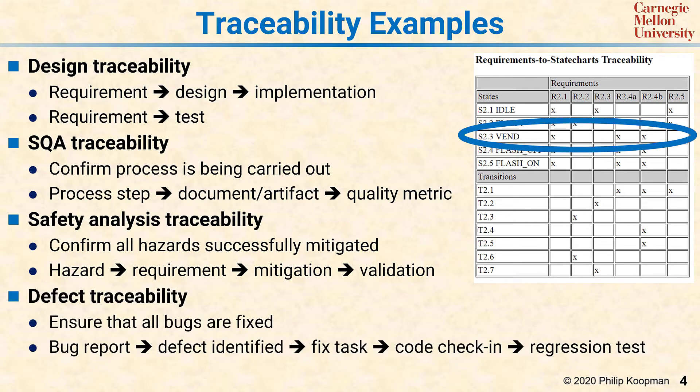A last example is defect traceability. You want to ensure that all important bugs get fixed, and that traceability chain looks like: a bug report to a defect that's been identified, to a task to fix the bug, to a code check-in from the result of the bug fix, and a regression test to make sure the bug was actually fixed. With all these examples, there are two types of traceability. One is left to right across the arrows — that's verification. The other is taking a look at the end result, for example the regression test and the bug fix, and going backwards to ask: did that actually fix the bug report? That would be validation.